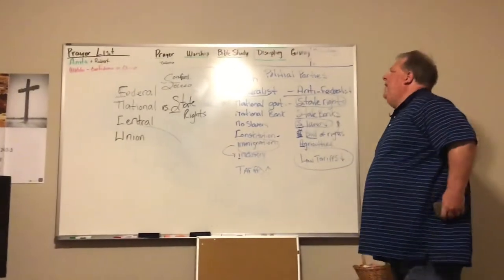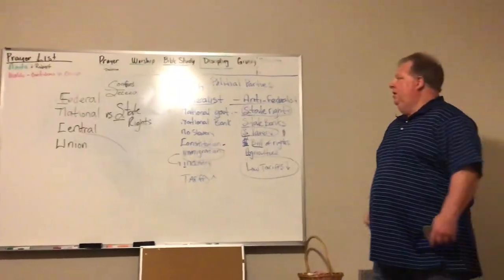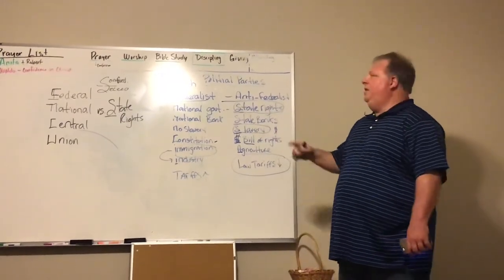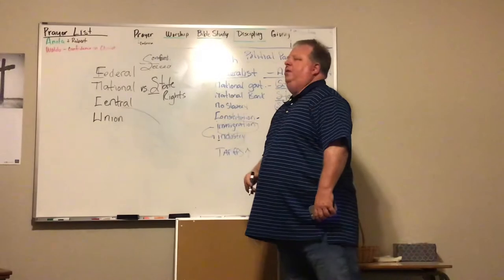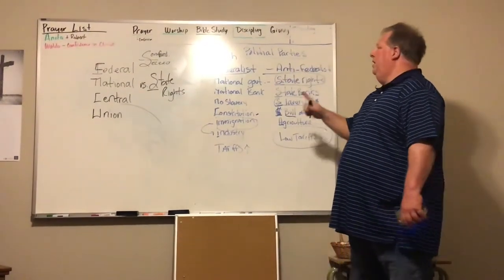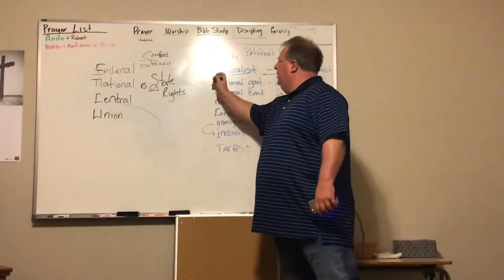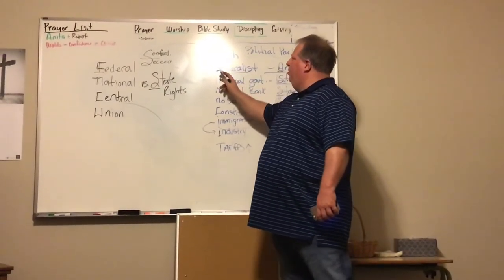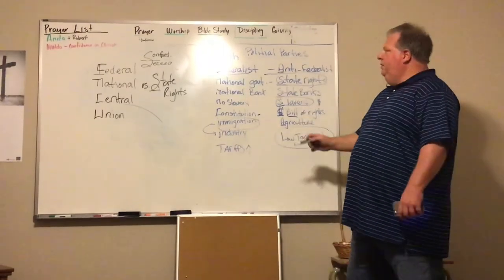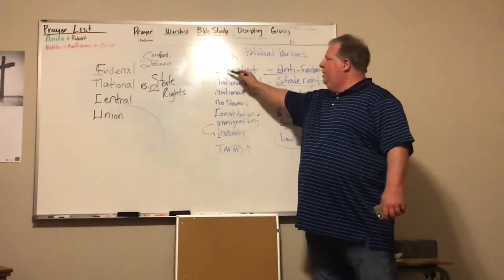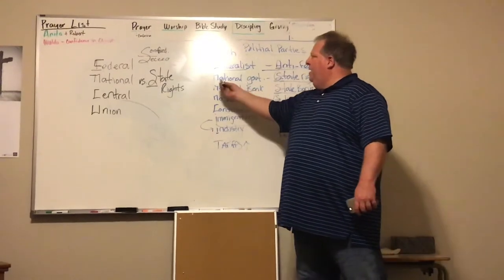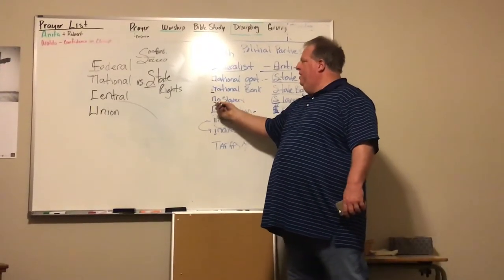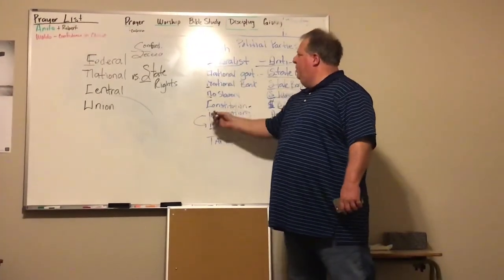All of this comes down to the fact that when we made our Constitution, all of this is going to be fought over, and we're going to fight each other during the Civil War over these same things. The two groups fighting during the Constitutional era are going to be called the Federalists and the Anti-Federalists. The Federalists are from the North, so everything they believe in starts with a C, F, or N. They believe in a big national government, a national bank, and no slavery.